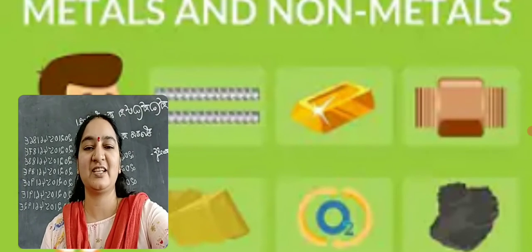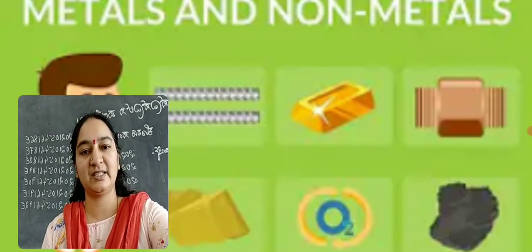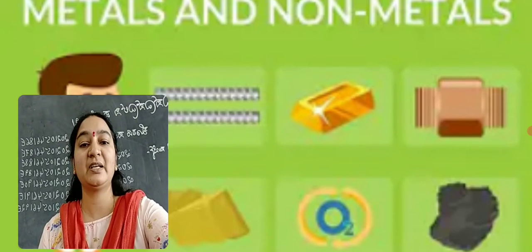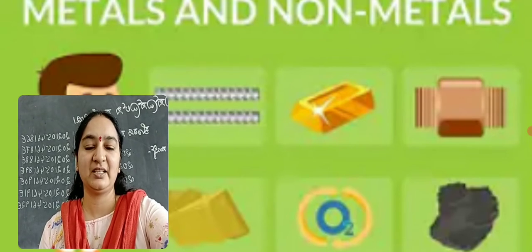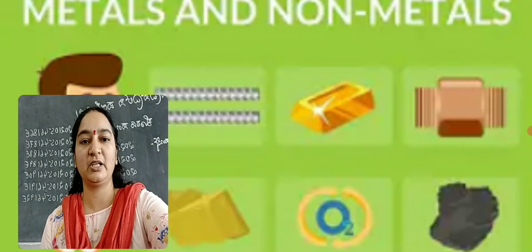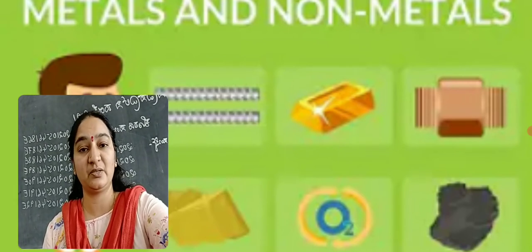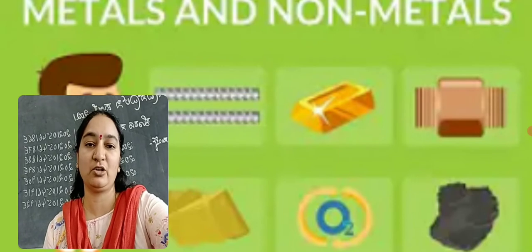welcome to science bridge course class. So in the last class we discussed about chemical bonds. In that there are two types of chemical bond, ionic bond and covalent bond. And also learned what are the differences between covalent and ionic bond.